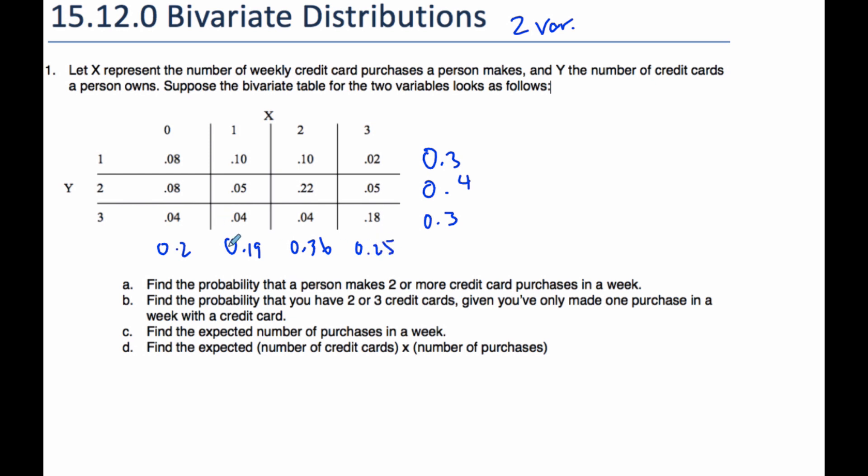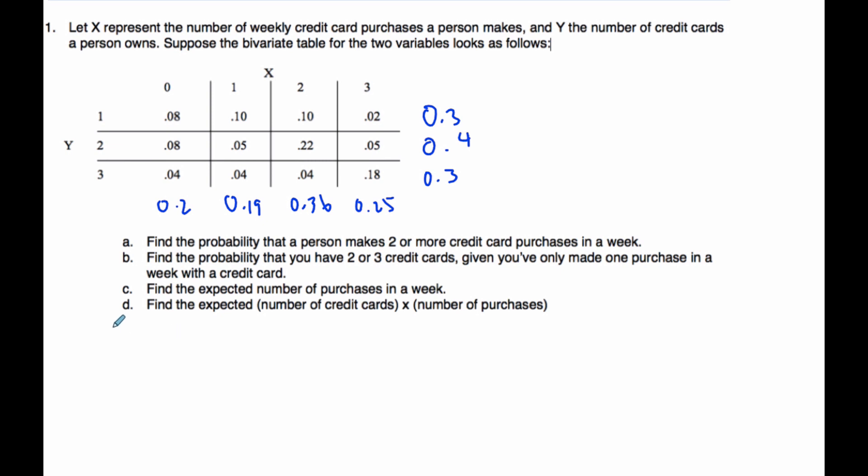Now if I look at these probability questions, find the probability that a person makes two or more credit card purchases in a week. That's talking about credit card purchases, which is X. I want X to be greater than or equal to 2. That is simply these two values here, the probability that X is 2 plus the probability that X is 3. If I add up 0.36 plus 0.25, I end up with 0.61.